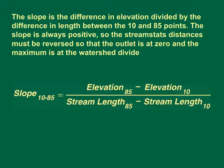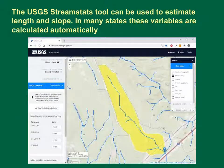The slope is the difference in elevation divided by the difference in length between the 10 and 85 points. The slope is always positive, so the StreamStats measurement tool distances must be reversed so that the outlet is at zero and the maximum is at the watershed divide. The tributary at Pinto Mesa has a slope of about 536 feet per mile. The USGS StreamStats tool can be used to estimate length and slope.